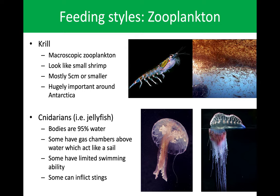Krill are those big red patches we see whales chasing down when they're feeding. Much smaller than shrimp — only about five centimeters long. We can find a huge abundance of these krill in colder, polar waters. The Southern Ocean has a very large abundance and they're very important for the formation of the food chain near Antarctica.